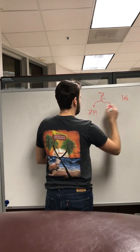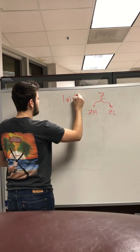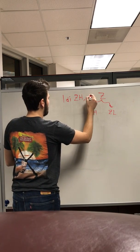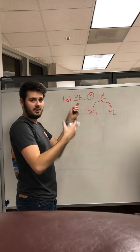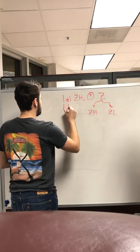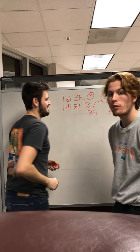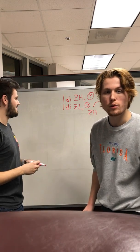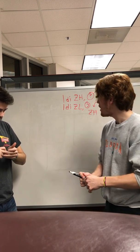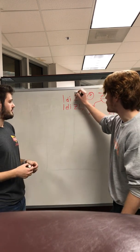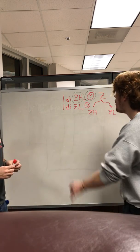The way we load Z is with the LDI or load immediate instruction. We write LDI Z high, and the value you put there will be the high byte of the Z pointer, then we do the same for the low byte. The load immediate instruction takes a register and an immediate value as its syntax.